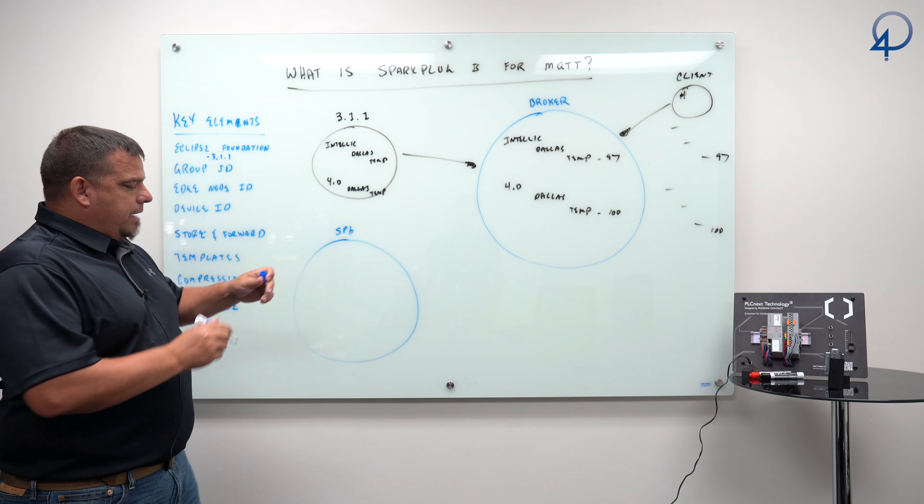A couple of important things: my MQTT broker doesn't care whether my payloads are Spark Plug B or not. A broker that can't unpack a Spark Plug B payload can still administer it for a client that can, as long as it's built on the MQTT 3.1.1 specification. Because of that, I can put MQTT 3.1.1, MQTT 5, and Spark Plug B payloads all together in the same broker.